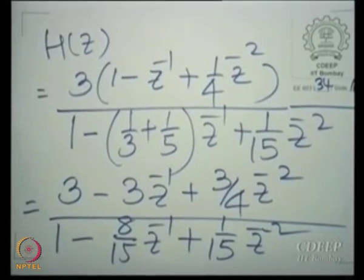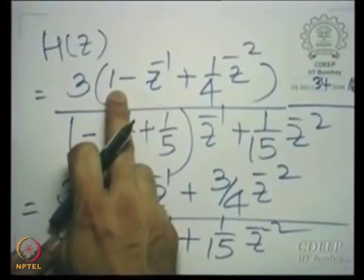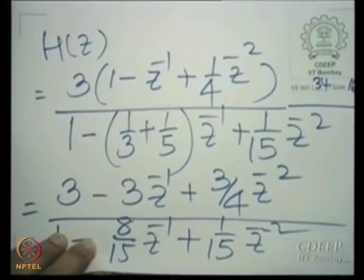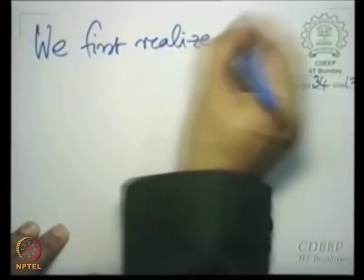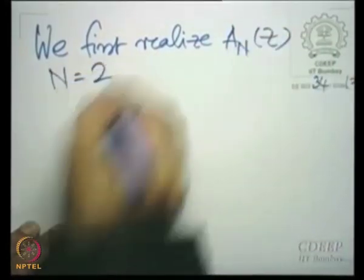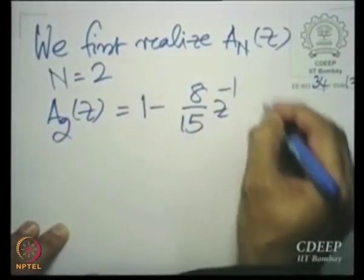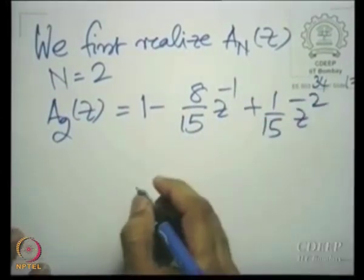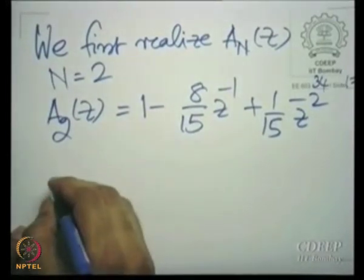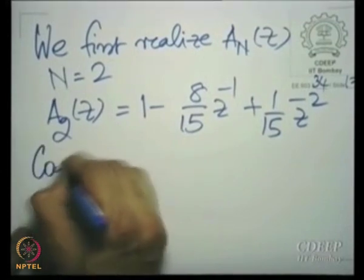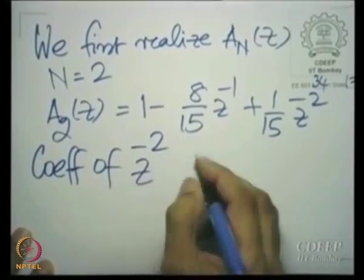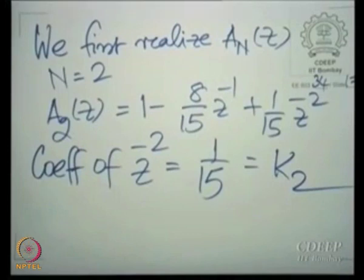Now let us start by realizing the denominator as A(z). I have conveniently chosen the numerator degree to be less than or equal to the denominator degree; otherwise, long division would be needed first. We realize A2(z), where m equals 2. So A2(z) is 1 minus 8/15 z-inverse plus 1/15 z to the power minus 2. The coefficient of z to the power minus 2 is 1/15, and this equals K2, so K2 is 1/15.